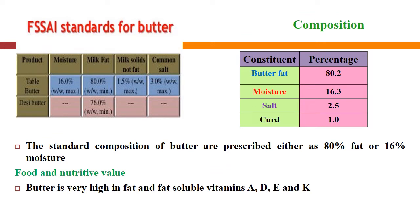The general composition of butter is: butter fat 80.2%, moisture 16.3%, salt 2.5%, and curd 1%. The FSSAI standard for table butter is: moisture 16% maximum, milk fat 80% minimum, milk solids not fat 1.5% maximum, and common salt 3%. For desi butter, minimum fat is 76%. Butter is fully rich in dairy fat and is also an important source of fat-soluble vitamins like vitamin A, vitamin D, vitamin E, and vitamin K.